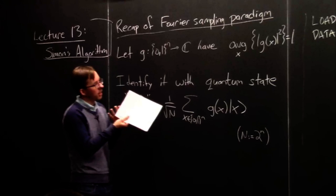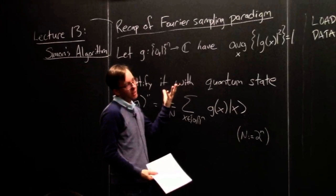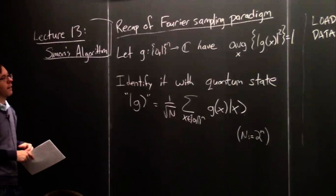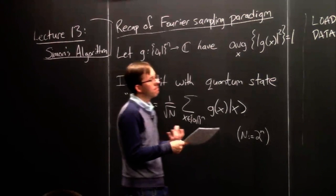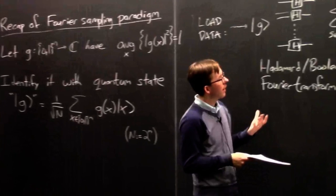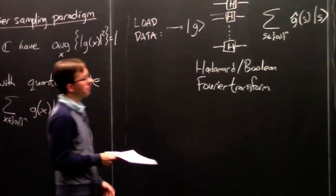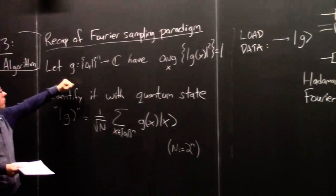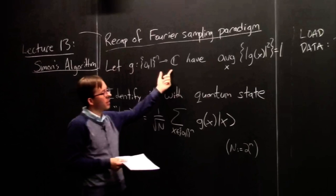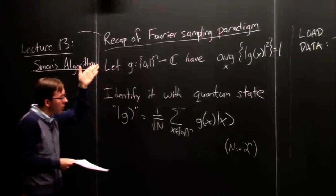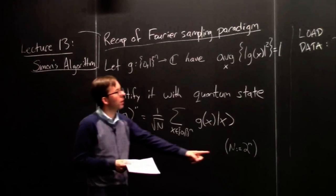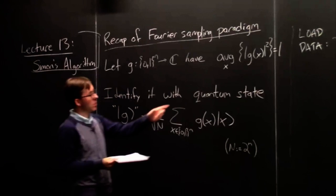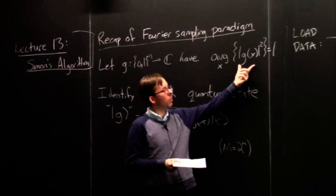This is a paradigm of taking some kind of long data vector and doing a Fourier transform of it, then getting samples from the most important XOR patterns in that data. We imagine we have a function g mapping n-bit strings into complex numbers. The truth table of that function is capital N complex numbers — that's our data. For normalization, we assume the average squared value of g is 1.